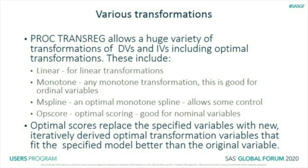TRANSREG has a huge number of options: linear ones for linear transformations, monotone ones — very good for ordinal variables (treating them as ordinal rather than continuous or categorical), M-splines for optimal monotone splines, and OPSCORE for nominal variables, which recodes levels to their optimal scoring rather than simply comparing each level to a reference level.